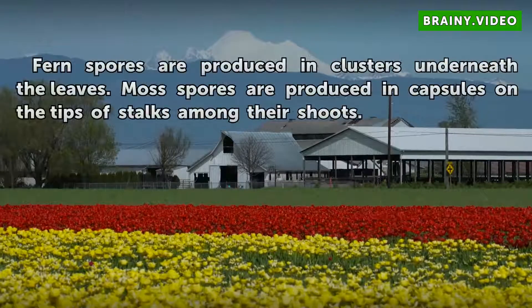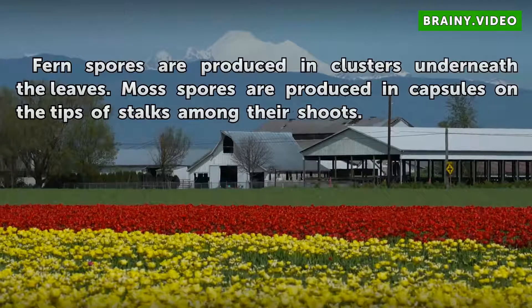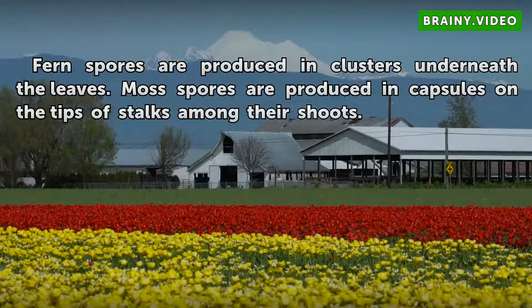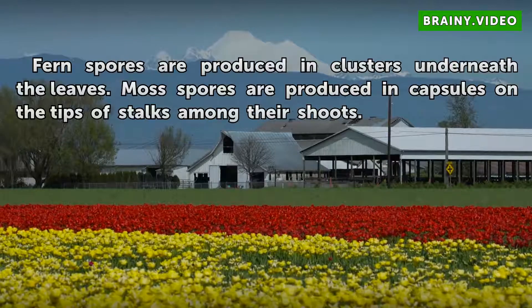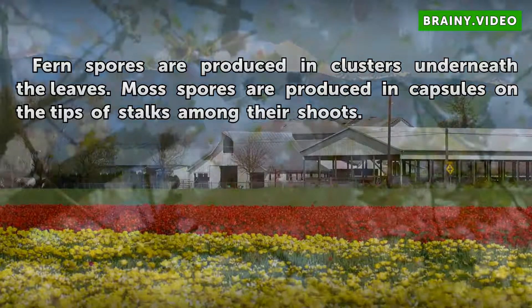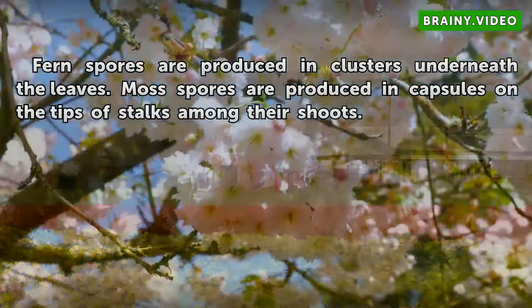Spores: fern spores are produced in clusters underneath the leaves, while moss spores are produced in capsules on the tips of stalks among their shoots.